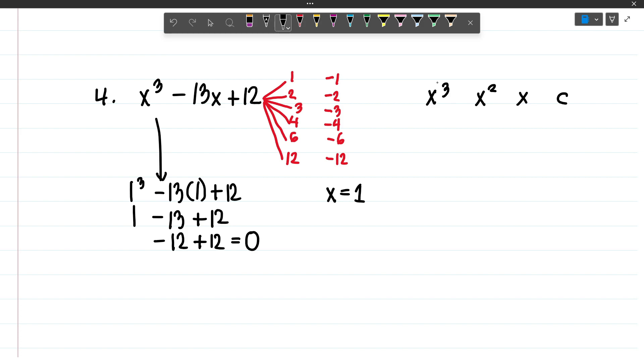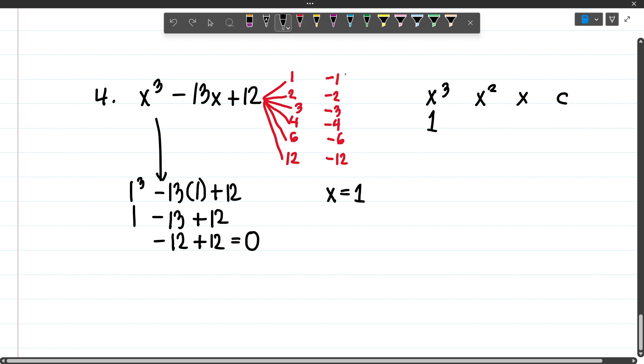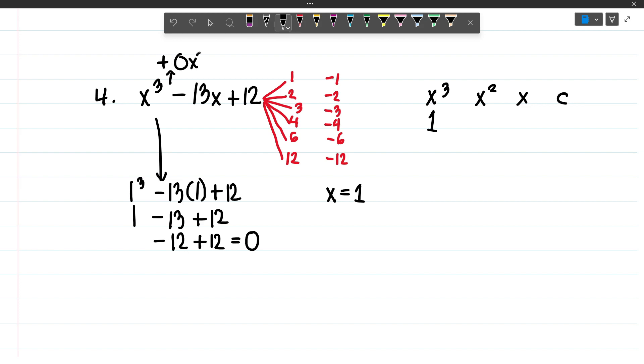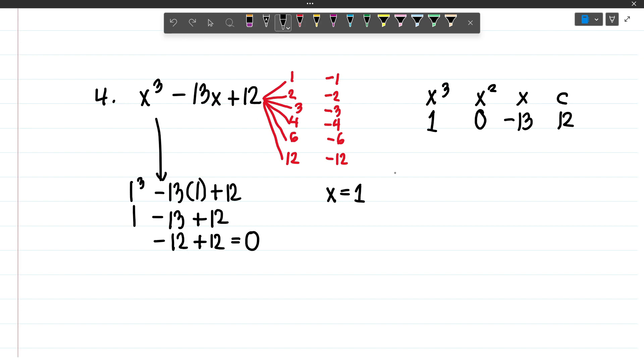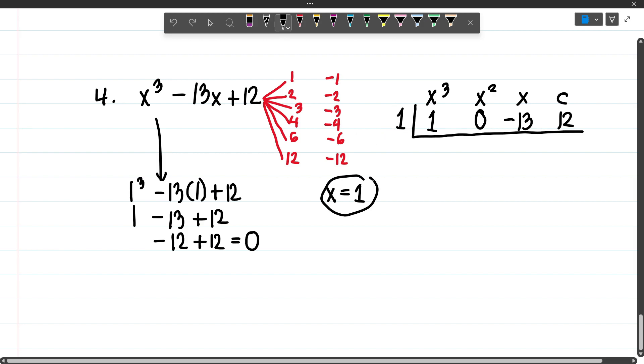The coefficient of x cubed is 1. The coefficient of x squared is non-existent, it's virtually plus 0x squared. The coefficient of x is negative 13, and your constant is 12. Now, to apply our synthetic division, we have to put this outside. This is 1 because your x equals 1.